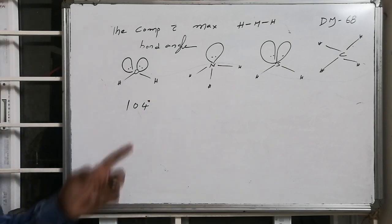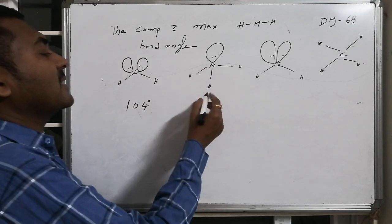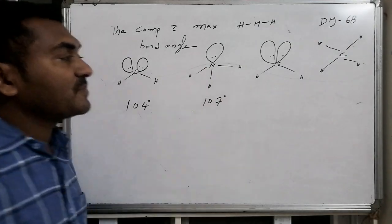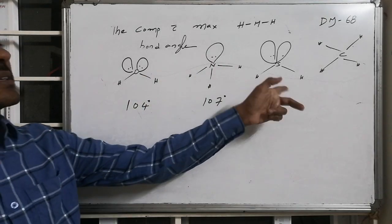Whereas here one lone pair is there, repulsions are minimum, bond angle is maximum. So therefore this is 107 degrees.